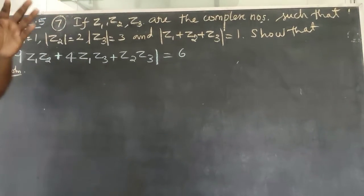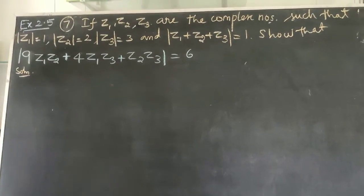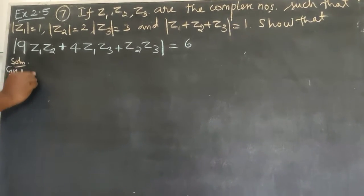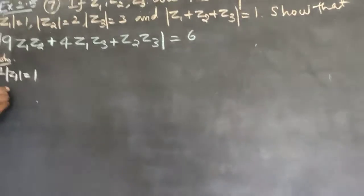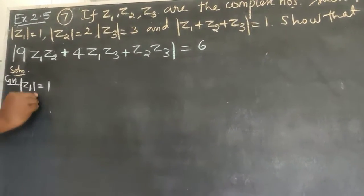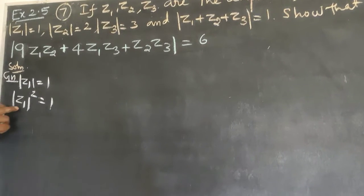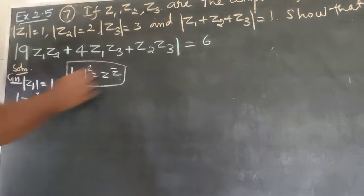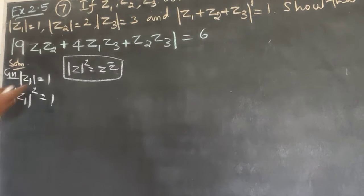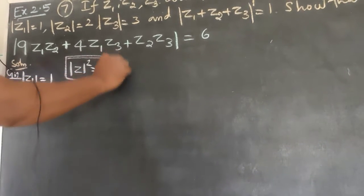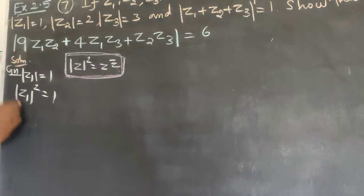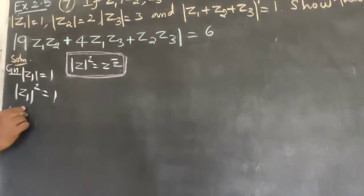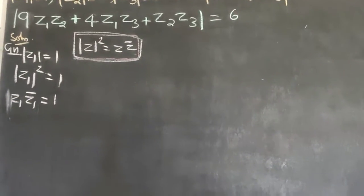Given conditions: Z1, Z2, Z3 are complex numbers. First given: modulus of Z1 equals 1. Squaring both sides, modulus of Z1 squared equals 1, which means Z1 times Z1 bar equals 1.